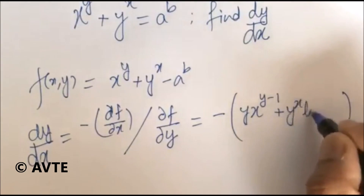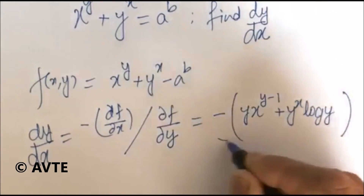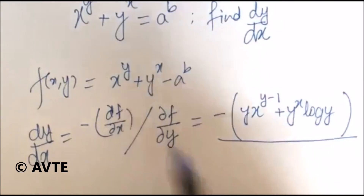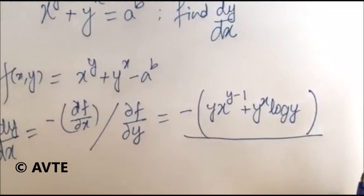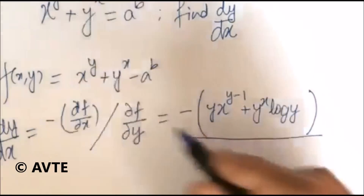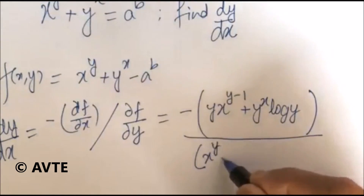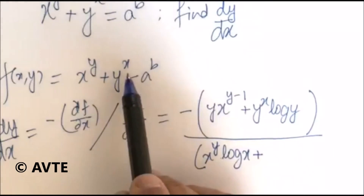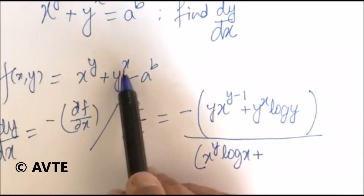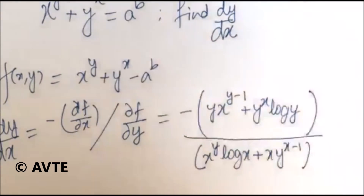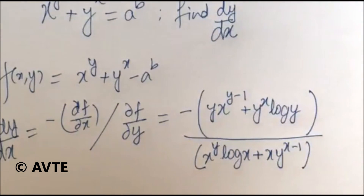So the numerator is minus y·x^(y−1), divided by: when we differentiate with respect to y keeping x constant, x to the power y turns into an exponential function, giving x to the power y times log x. Since x is a constant and y is the variable, this is what you get. So isn't it a simple one?